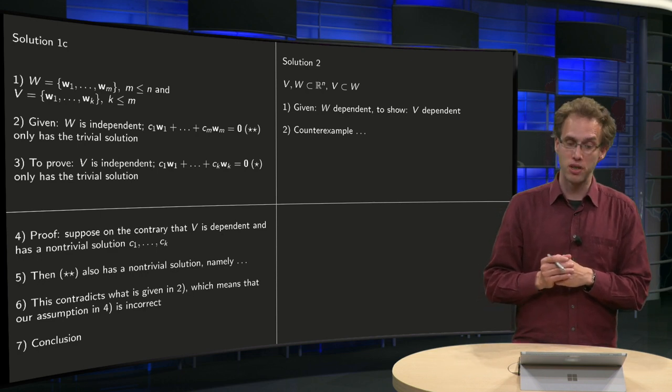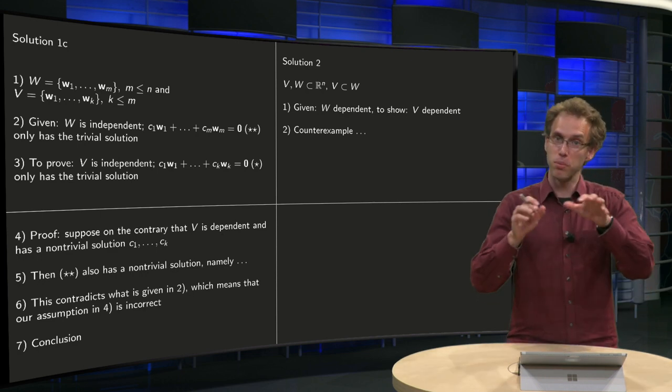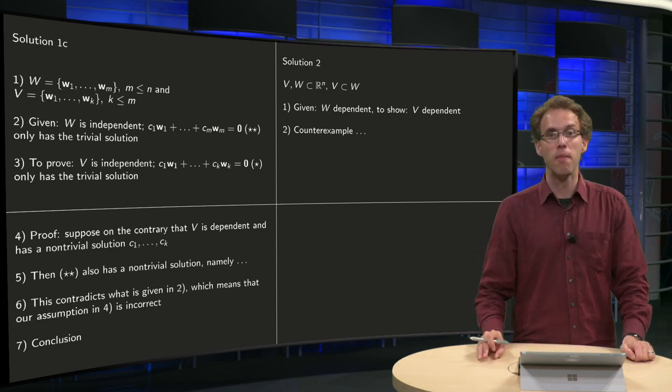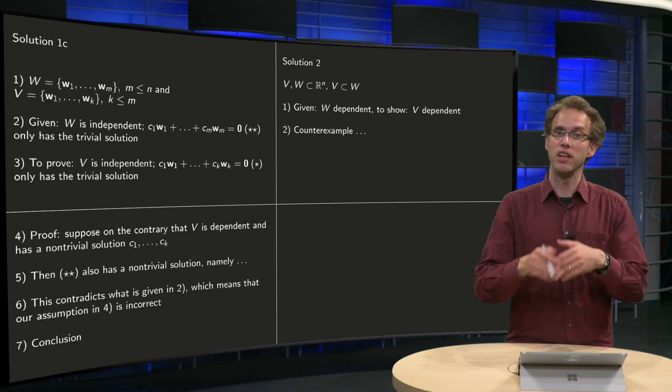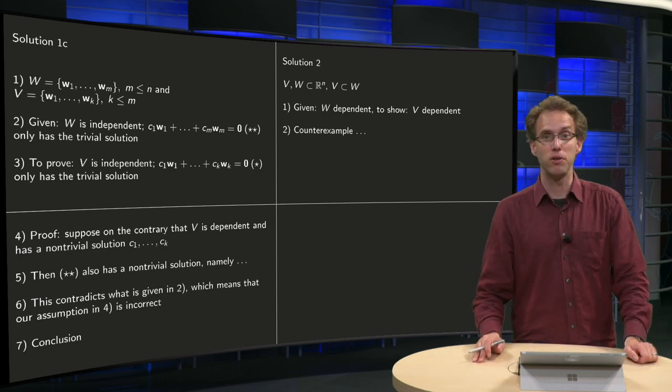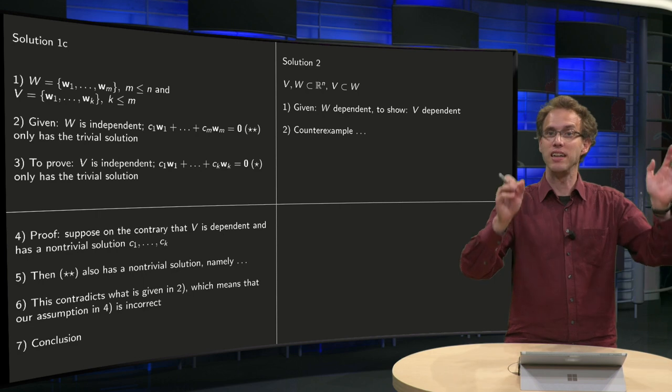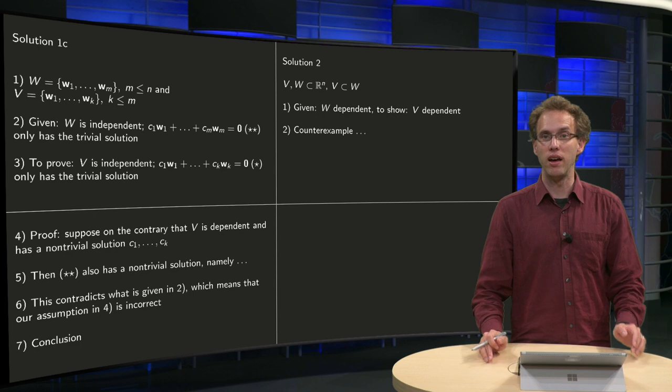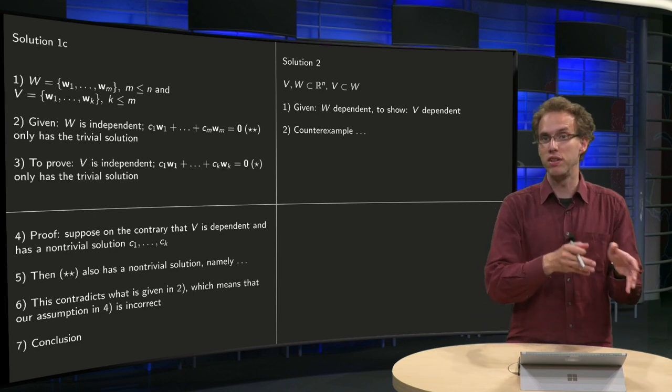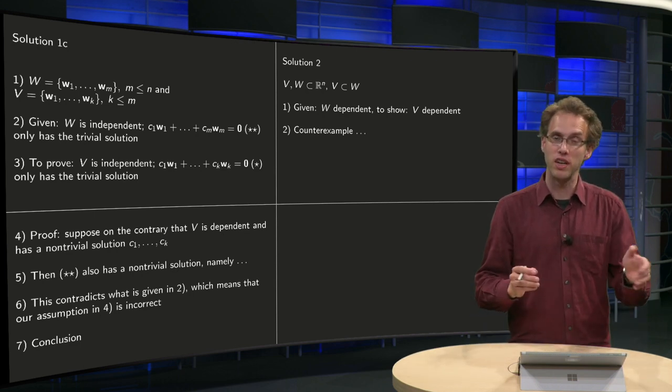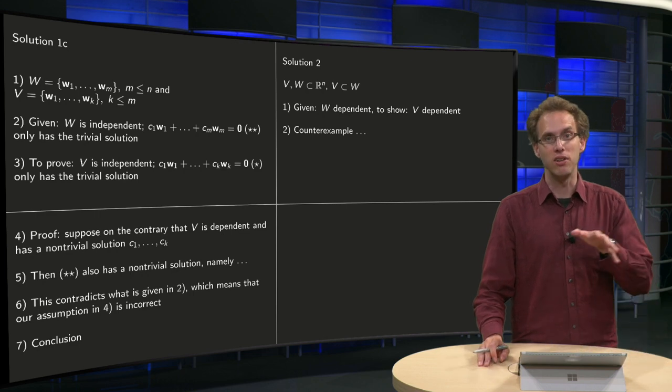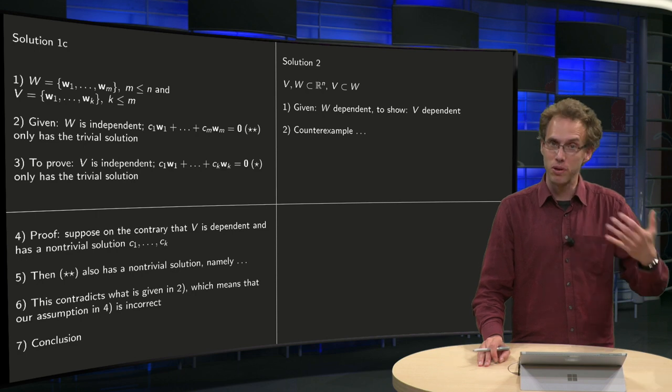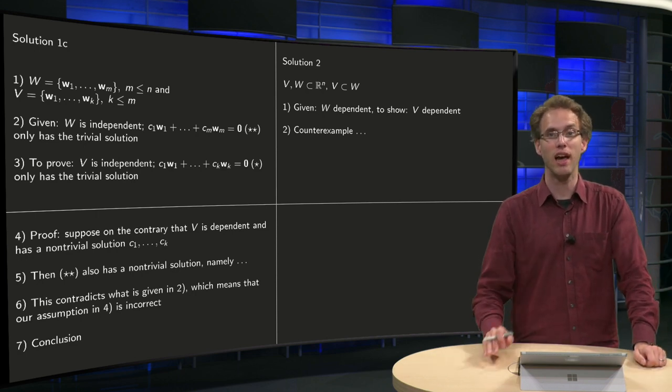suppose V is a subset of W and now W is dependent, do we now know that V is also dependent? Well, that's easy, that's not true, you can easily find a counter example yourself, just pick any dependent set for W, throw out all factors except for one, then your new set V is a subset of W but is independent and not dependent. The statement 2 is actually much easier to prove because it's not true, so you can easily disprove it using a counter example.